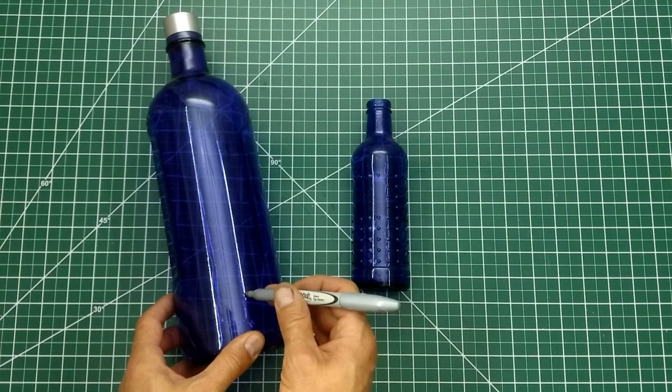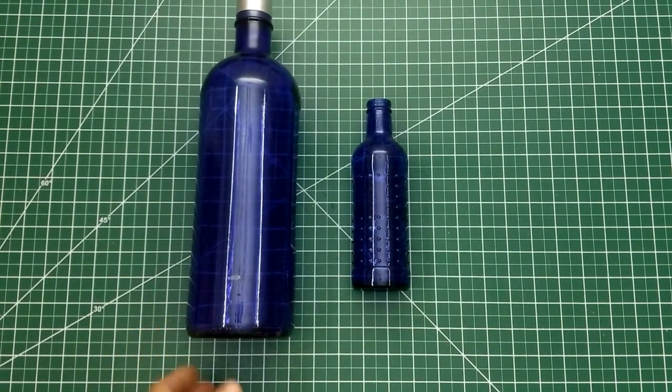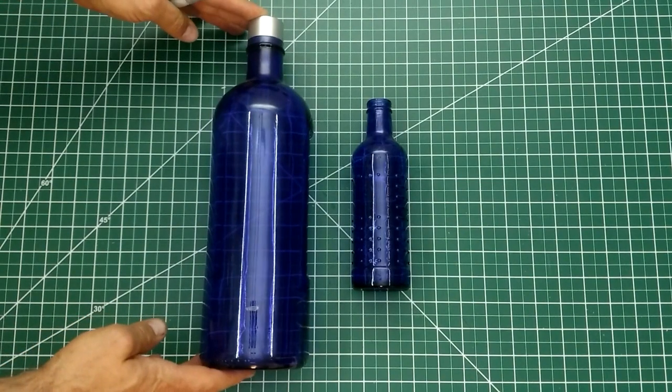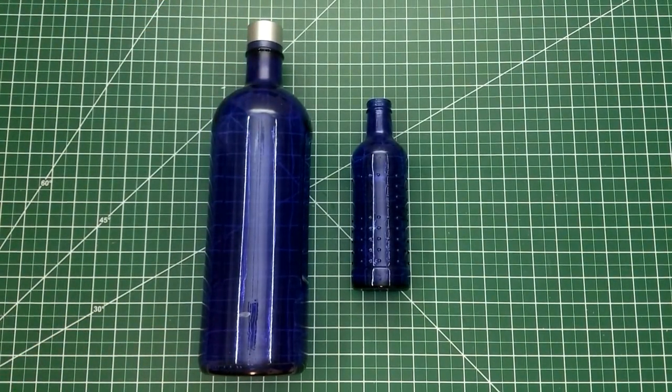I'm starting with this large blue bottle. I'll be cutting off the bottom of the bottle and saving the top for a future project. I'm using the smaller bottle to estimate where I want to make the cut.